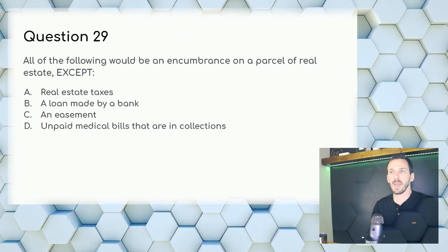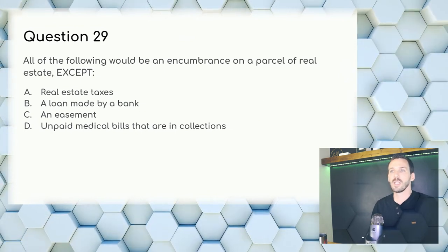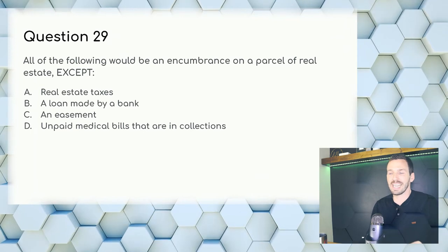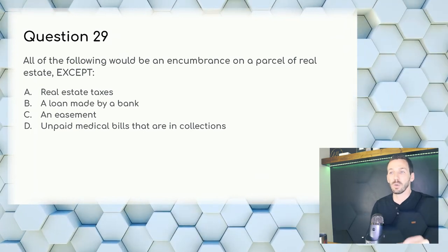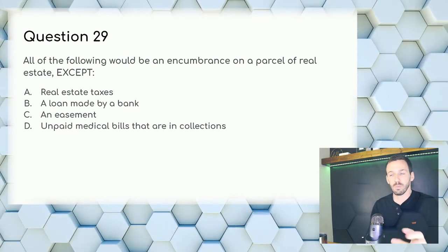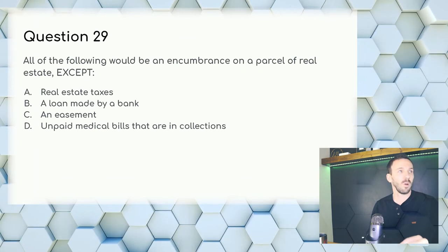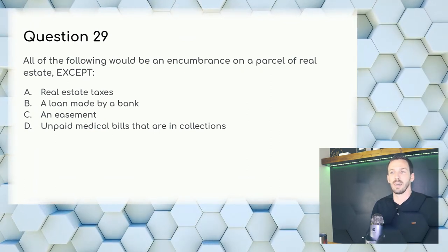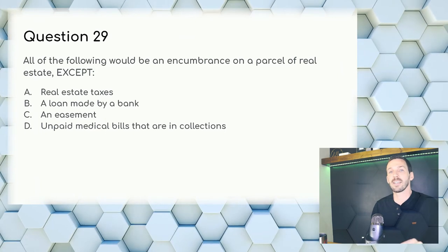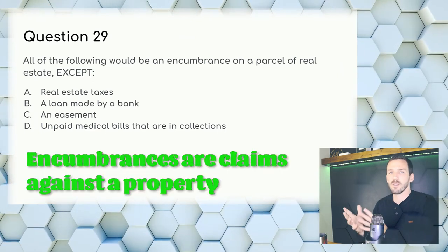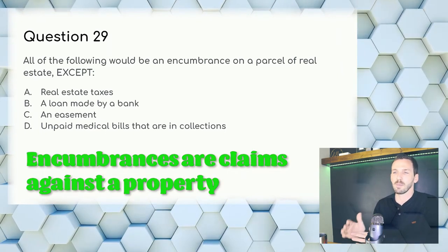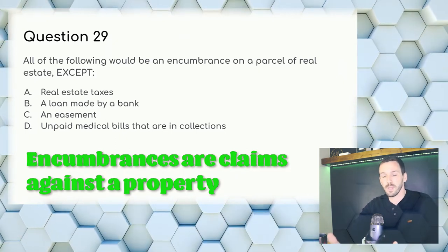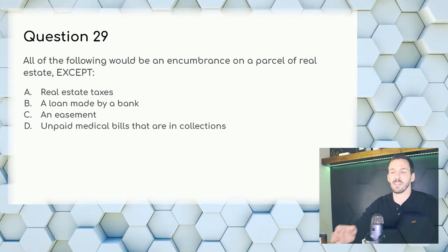Question 29: All of the following would be an encumbrance on a parcel of real estate except — real estate taxes, a loan, and an easement are obvious. Medical bills have nothing to do with running with the land. Answer: D, unpaid medical bills in collections.